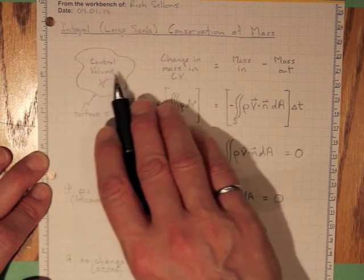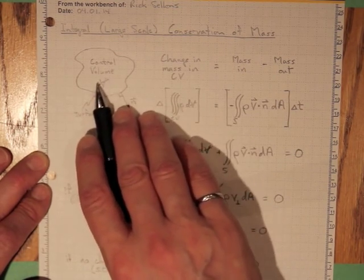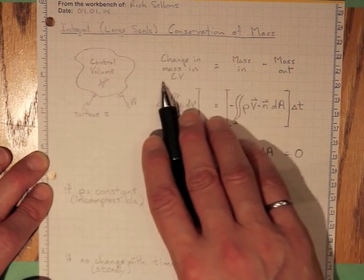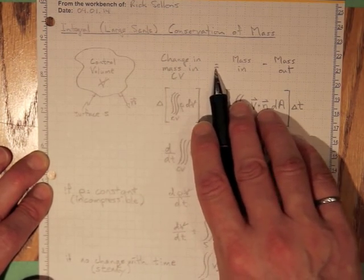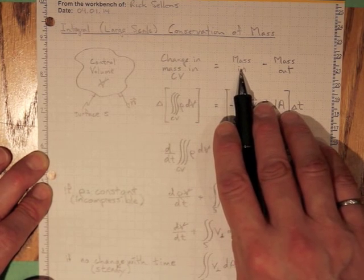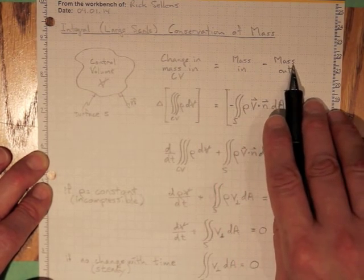So this is a control volume, this is an Eulerian way of looking at things. The change in the mass in the control volume must be equal to the mass in minus the mass out.